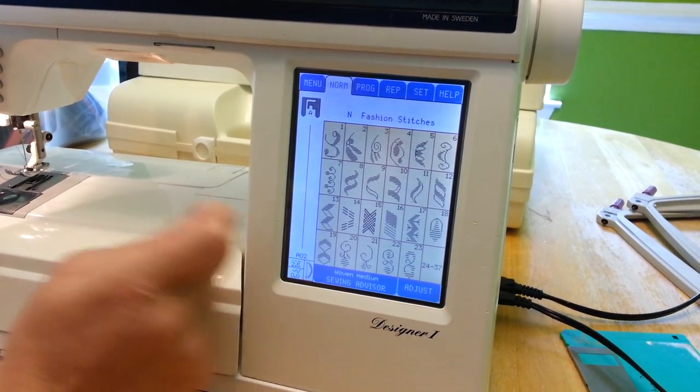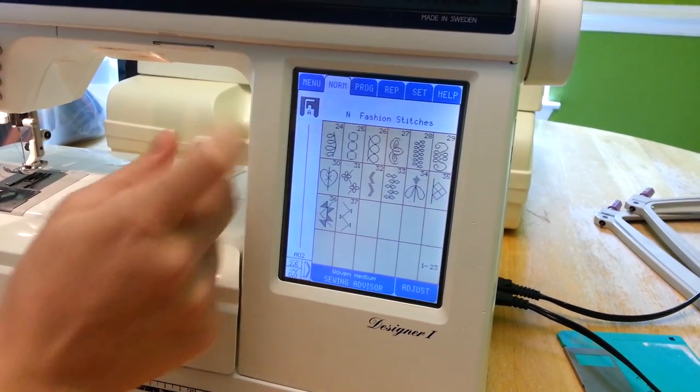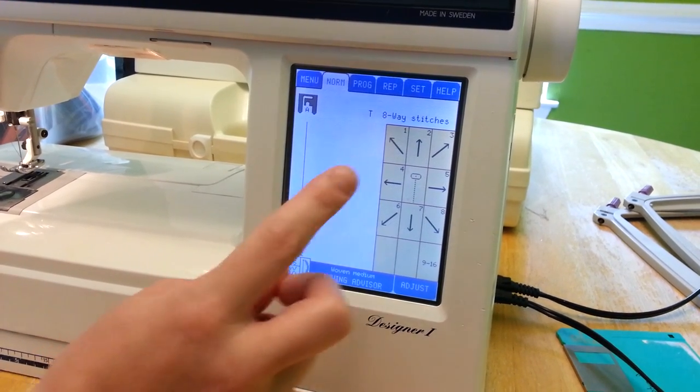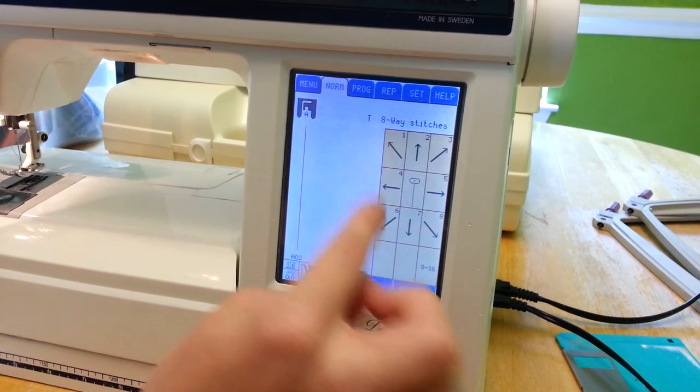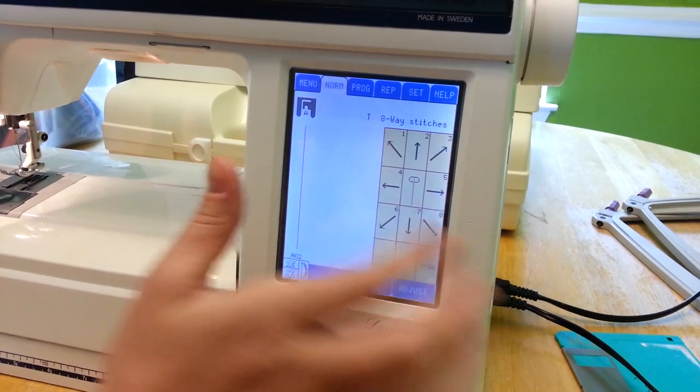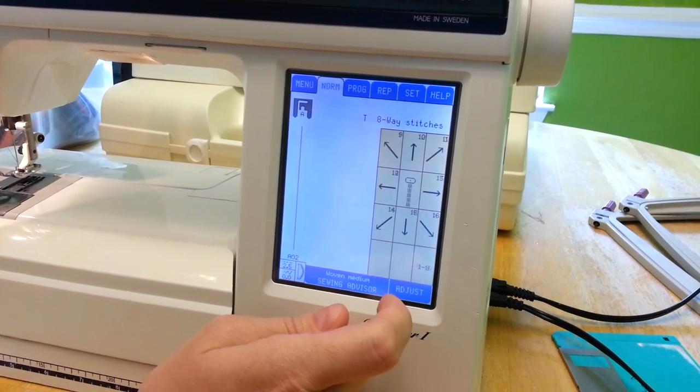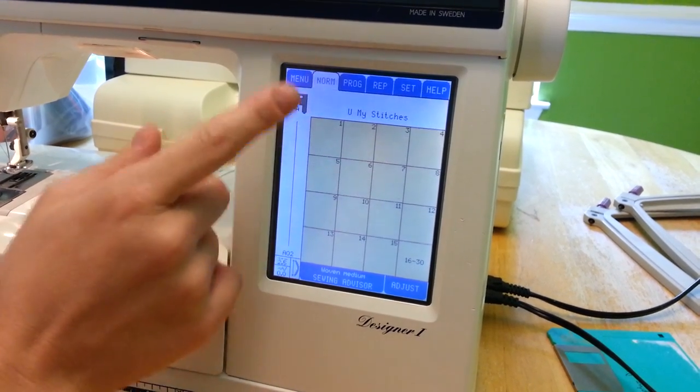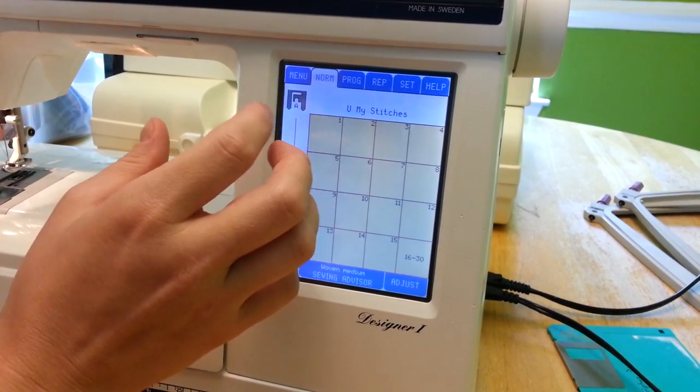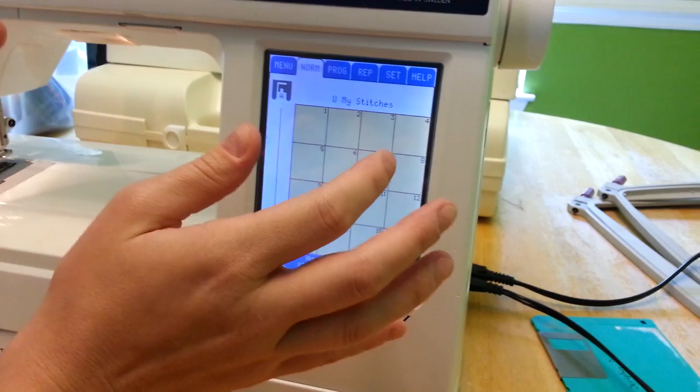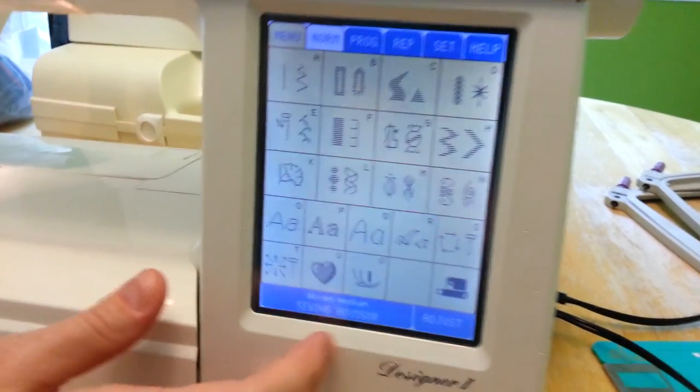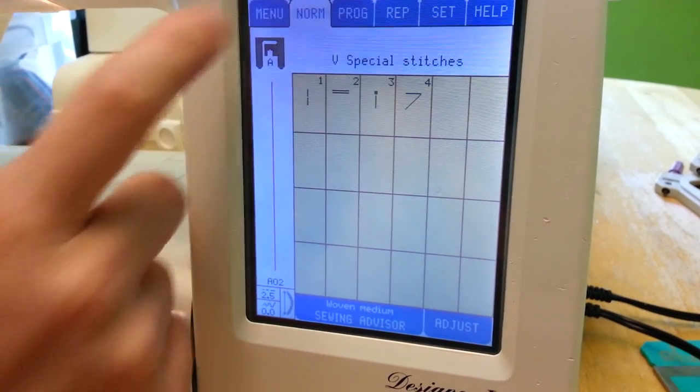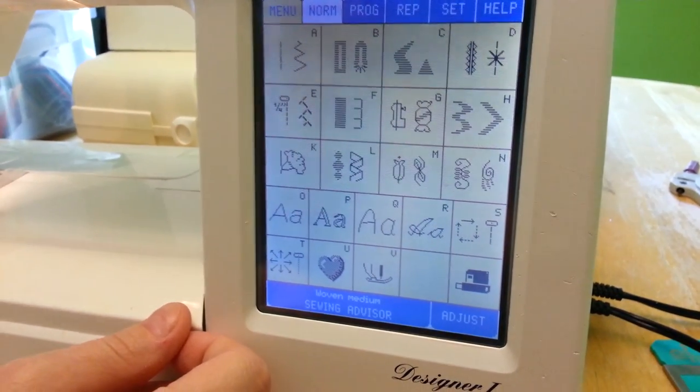Fashion stitches. Eight-way stitches, so you can tell it which way you want it to go. This is for my stitches. I believe this is where you can save the stitches, your stitch patterns and how you want them to be. Special stitches. And that pretty much shows you the menu.